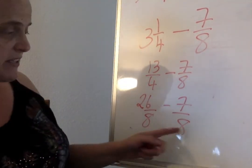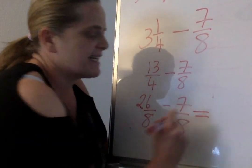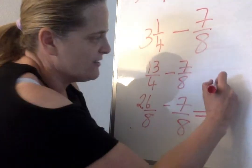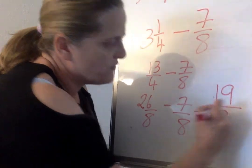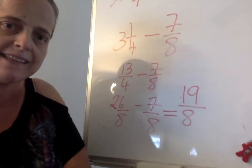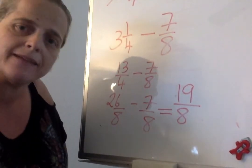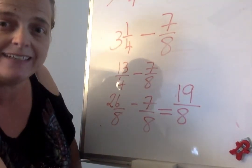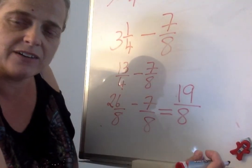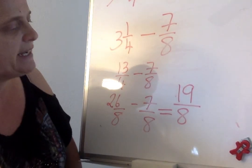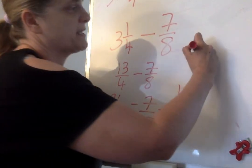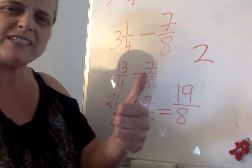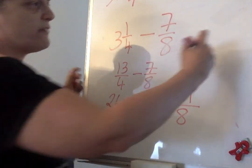26 subtract 7 is 19 over 8. But we're still not finished because now we have to take that improper fraction and make it a mixed number. How many groups of 8 are there in 19? How many groups of 8 are there? And how many will be left over? 8, 16. Oh, 2 groups. 16, 17, 18, 19. Oh, 3 left over. 3 over 8.